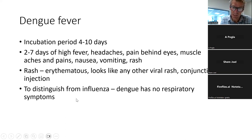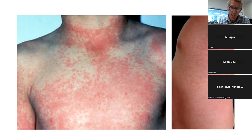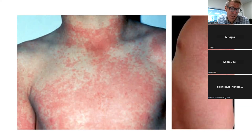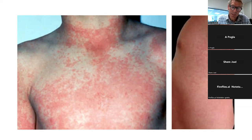This is the rash of dengue in a young boy — an erythematous, fine to sometimes coarse maculopapular rash. One characteristic is the tourniquet test: inflate a blood pressure cuff and sometimes petechiae appear below the tourniquet. This is a test for both capillary fragility and thrombocytopenia, so it's not very specific.